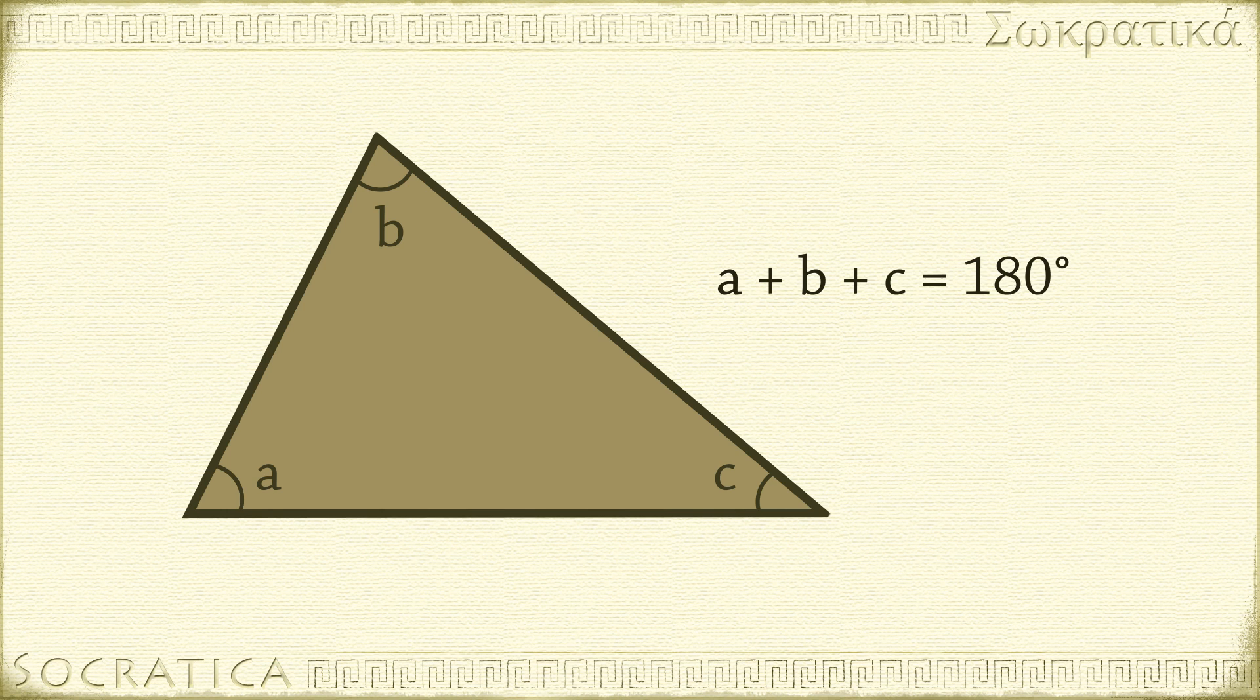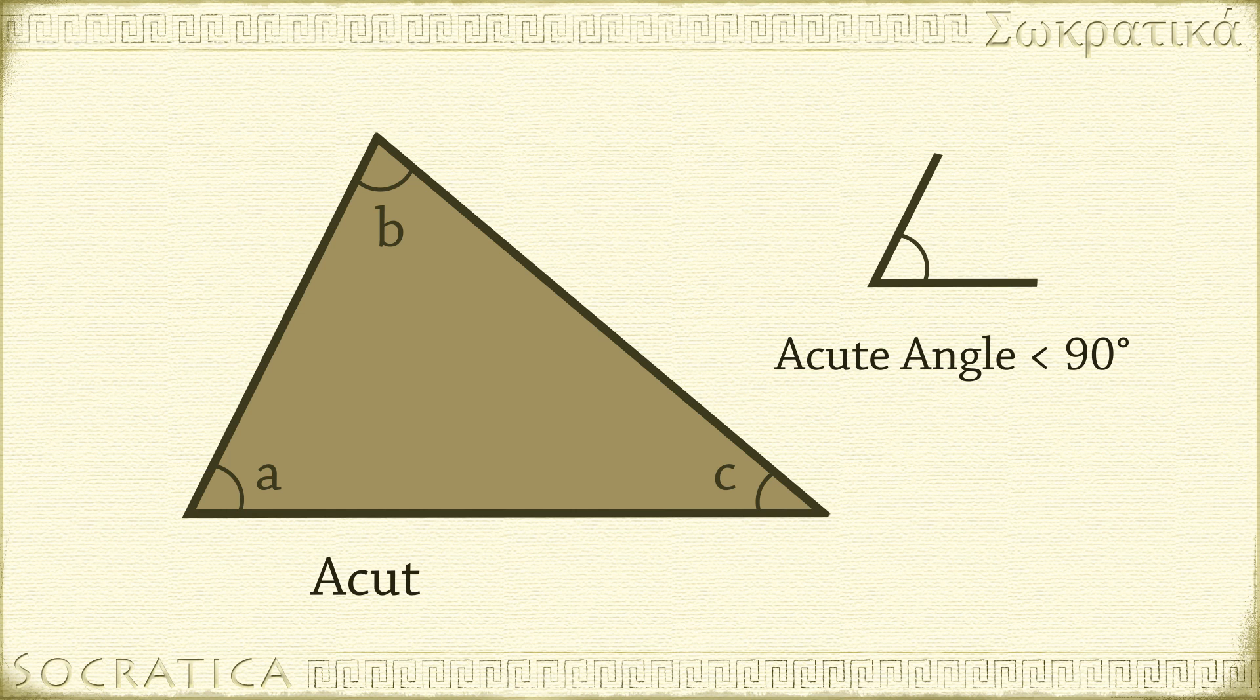Triangles are given a specific name depending on the size of the angles. If all three of the angles are less than 90 degrees, we call it an acute triangle.